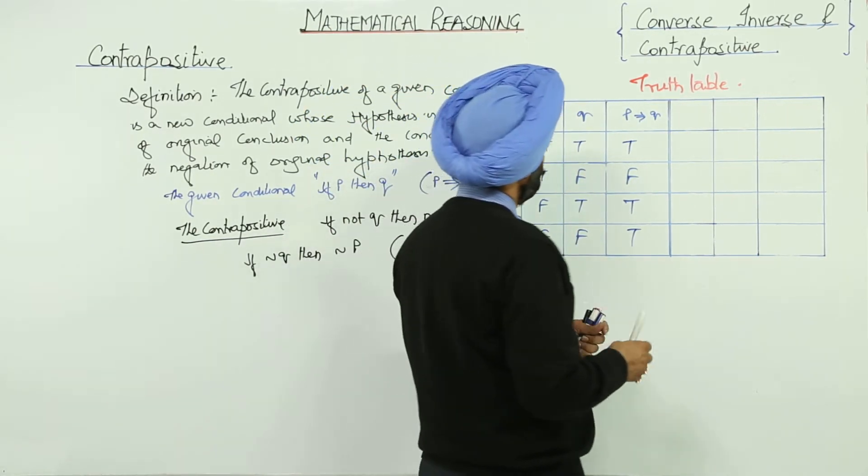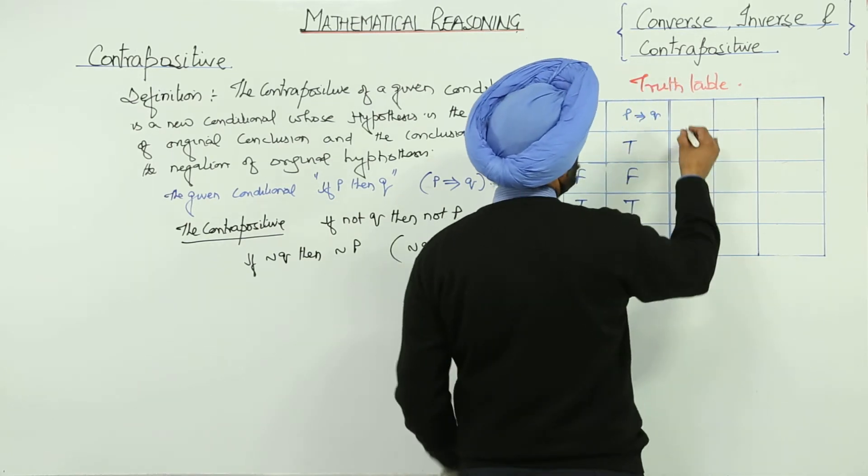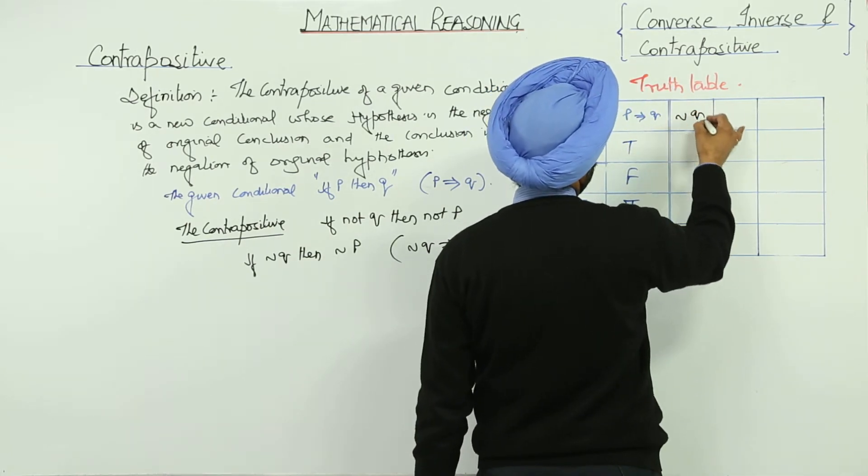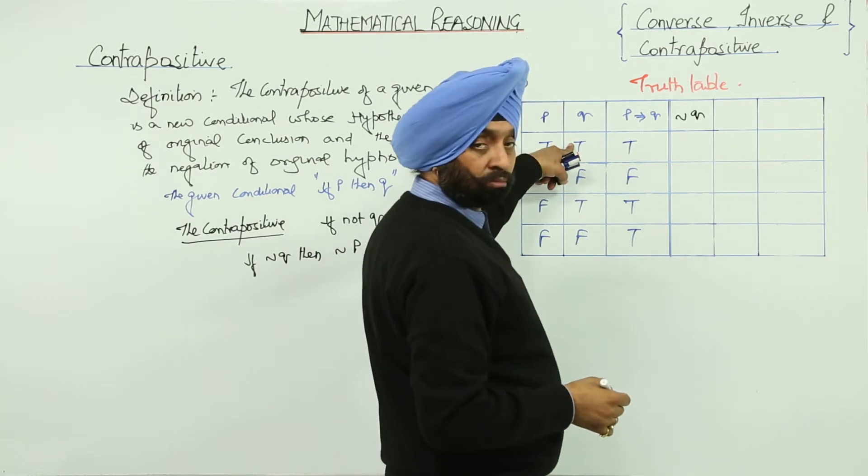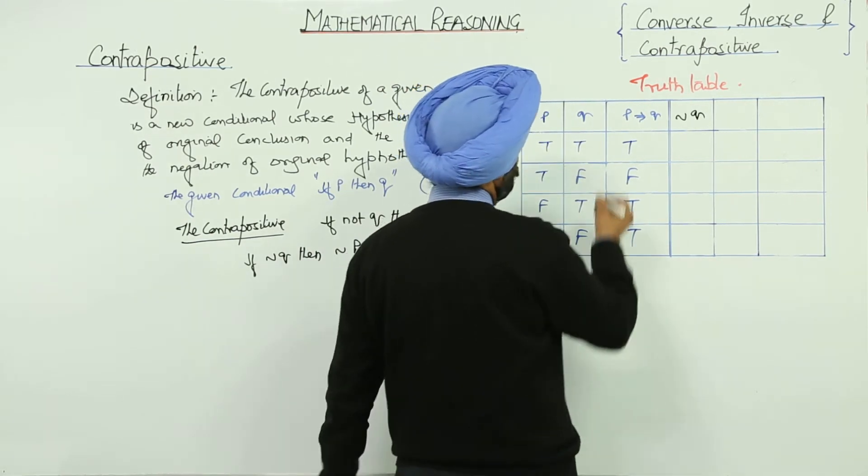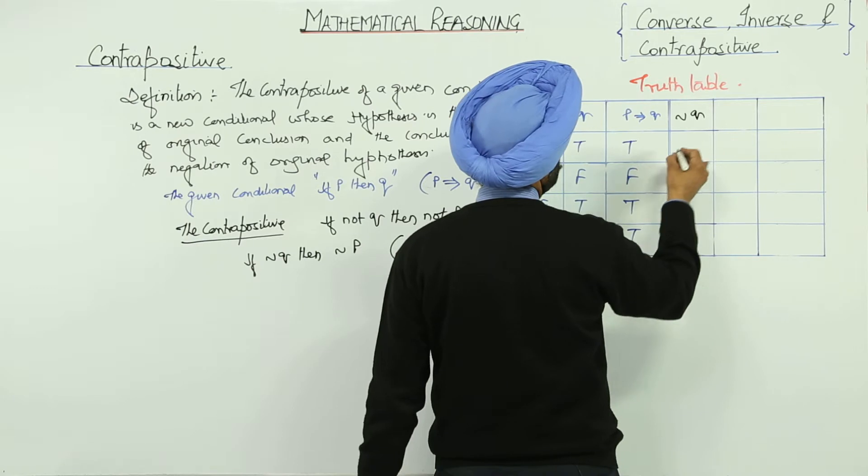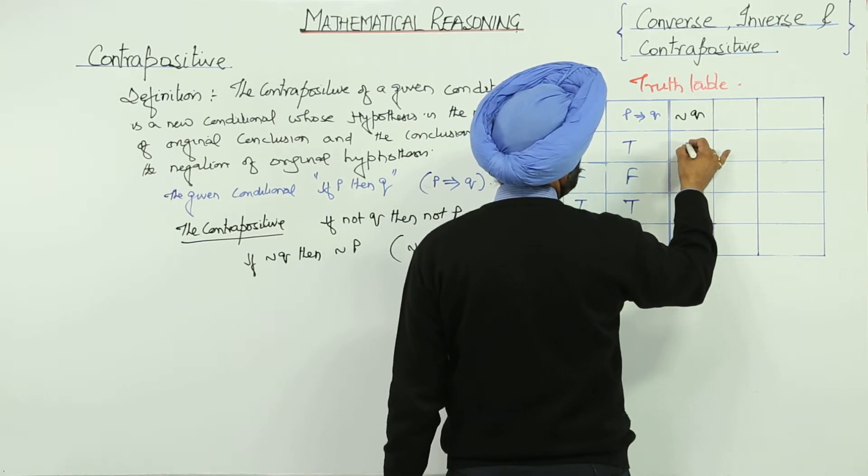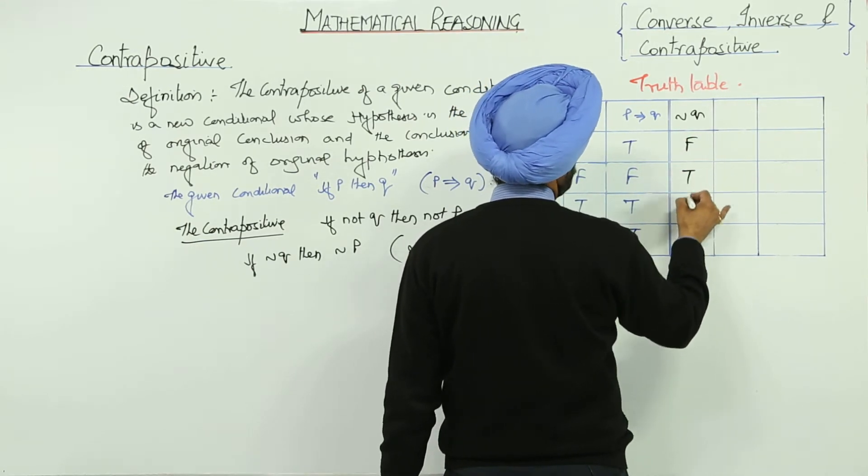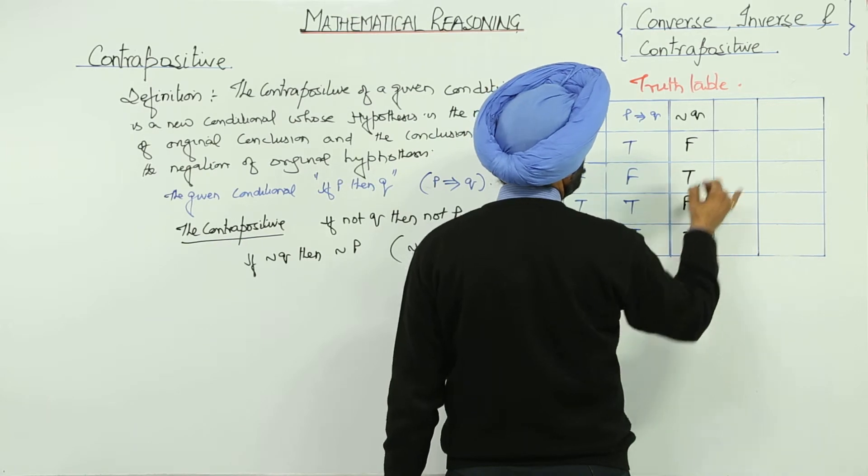Now, let's fill it with first of all negation of Q. Now, negation of Q means just negation part for this whole column. Now, this becomes false, true, false, true.